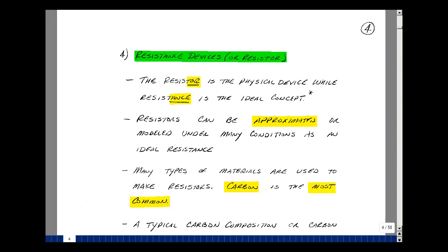In our last lesson, we introduced the ideal concept of resistance. In this lesson, we're going to take a look at a thing called a resistor, which is the physical device.